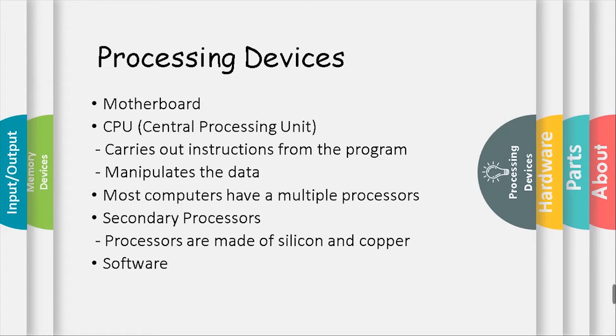Most computers have multiple processors. Secondary processors are made of silicon and copper. The interaction between the CPU and the secondary processors is like the interaction between a boss and a subordinate. The boss, which is the CPU, tells the subordinate what to do but not necessarily how to accomplish the task. The subordinate acts as support and only asks when guidance or more data is needed.